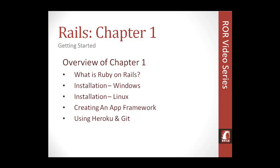That's not something that's required for this course, but just in case you want to try it yourself and mess around in Linux a little bit. We'll be going over in chapter one how to create an app framework, because Ruby on Rails generates the actual framework for us — it takes the work out of us having to create it. I'll show you how to start up an app and have it generate the folders and files. We'll also be using Heroku and Git for version control. So that's basically the gist of chapter one.